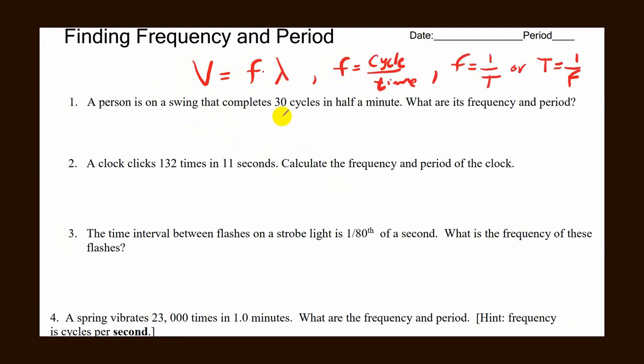Let's look at question number one. 30 cycles in half a minute. That's 30 cycles over 30 seconds, so 30 over 30 equals 1, which is 1 hertz. That's your frequency. Now we need to find the period. Period is T over frequency, which is 1. So 1 over 1 equals 1.